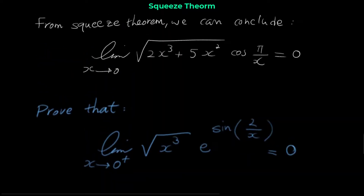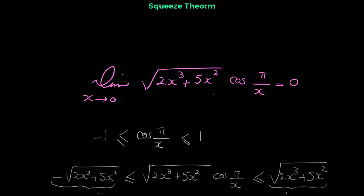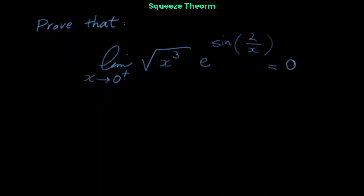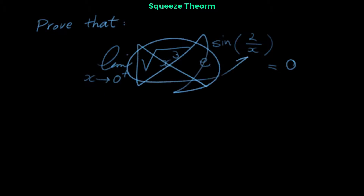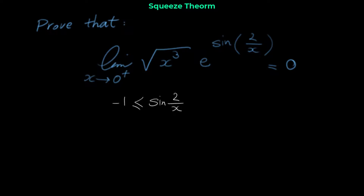If you remember from the previous question, we start this type of question from the trig part — from the sine here. So here you have to start from the sine part of this limit; forget the other parts. First we say: sin(2/x) is always between negative 1 and 1. Any sine or cosine function is always between negative 1 and 1.